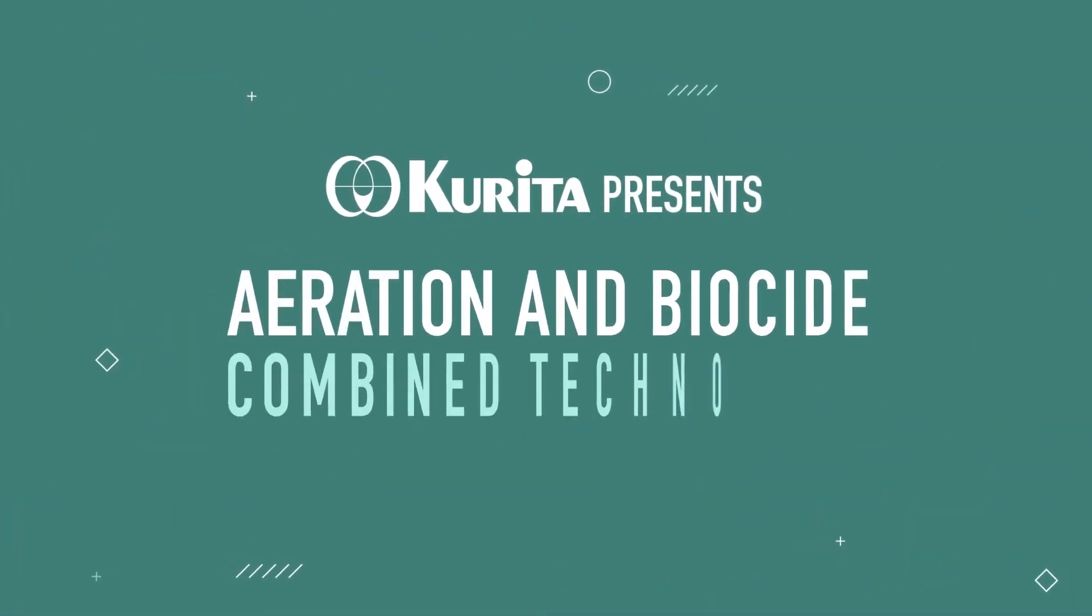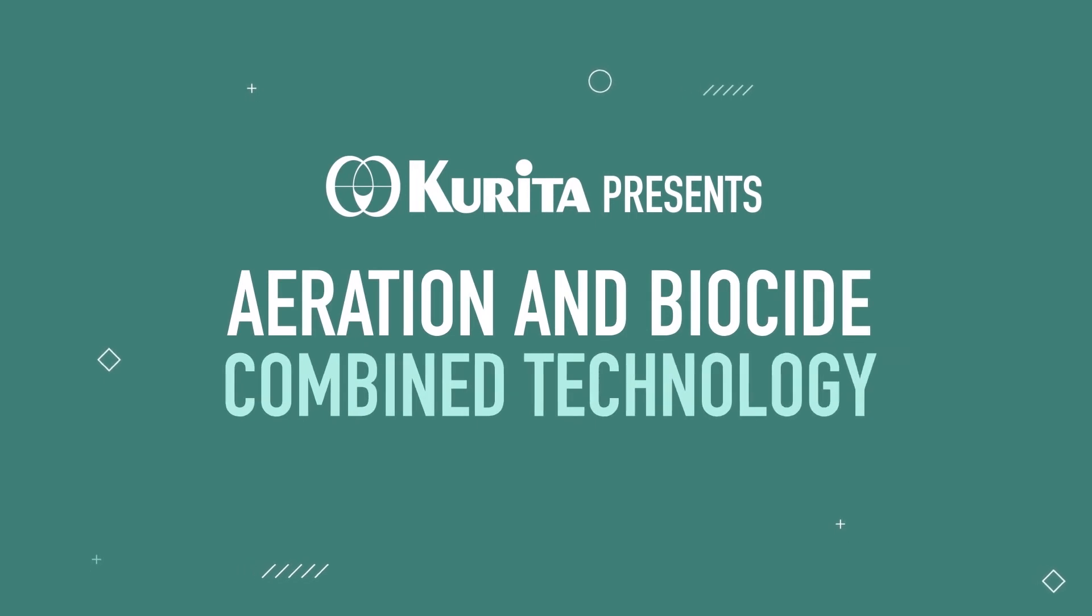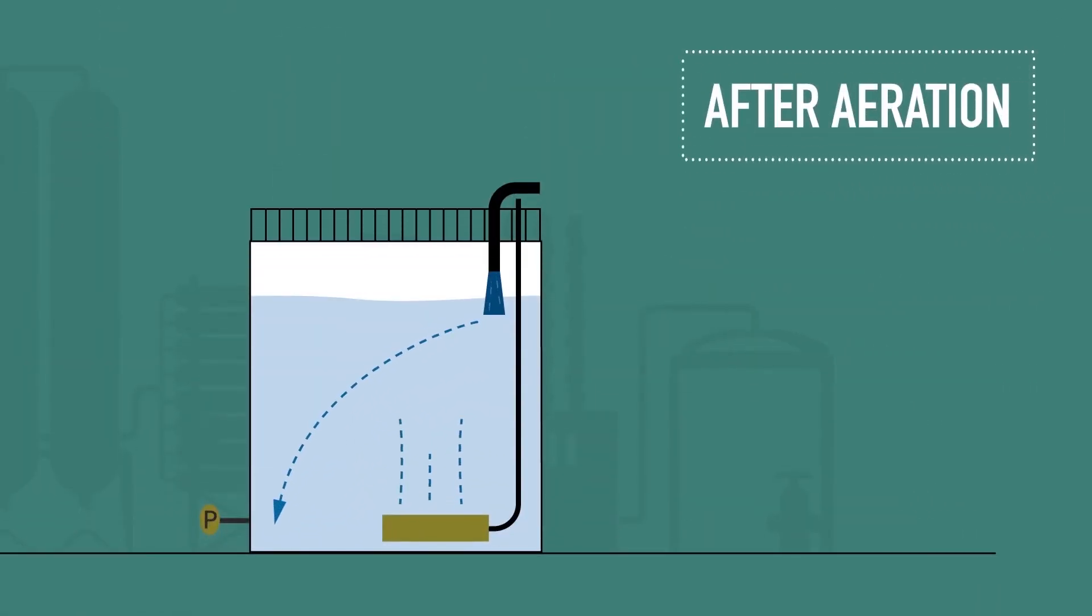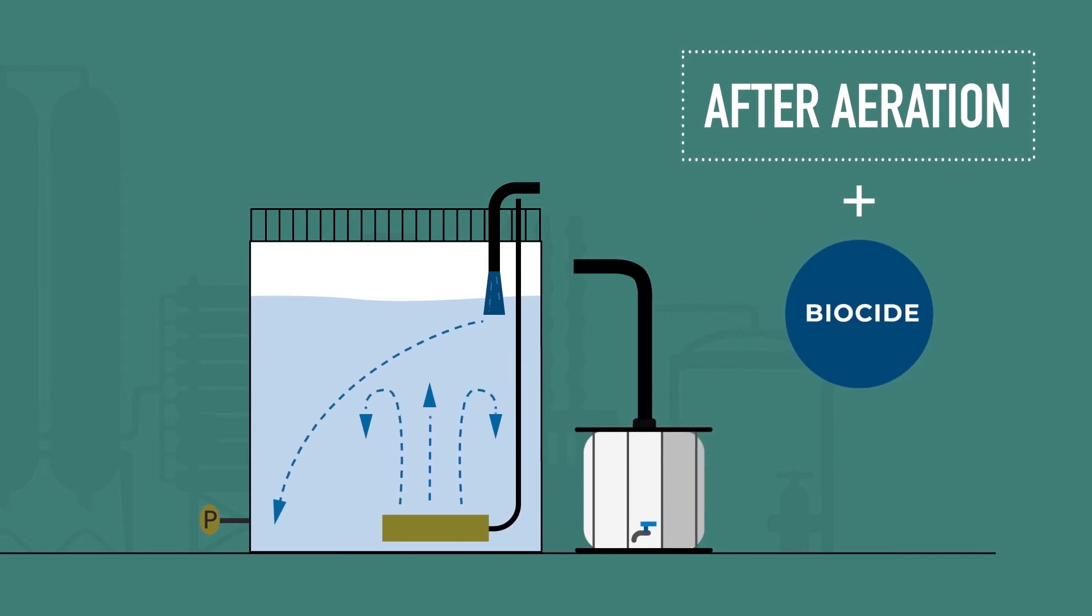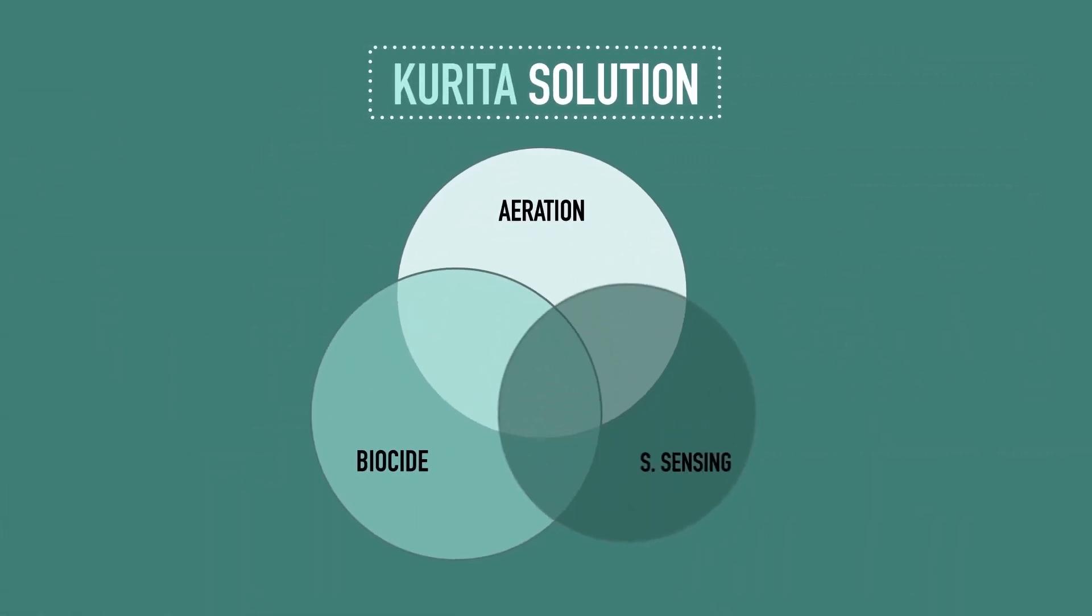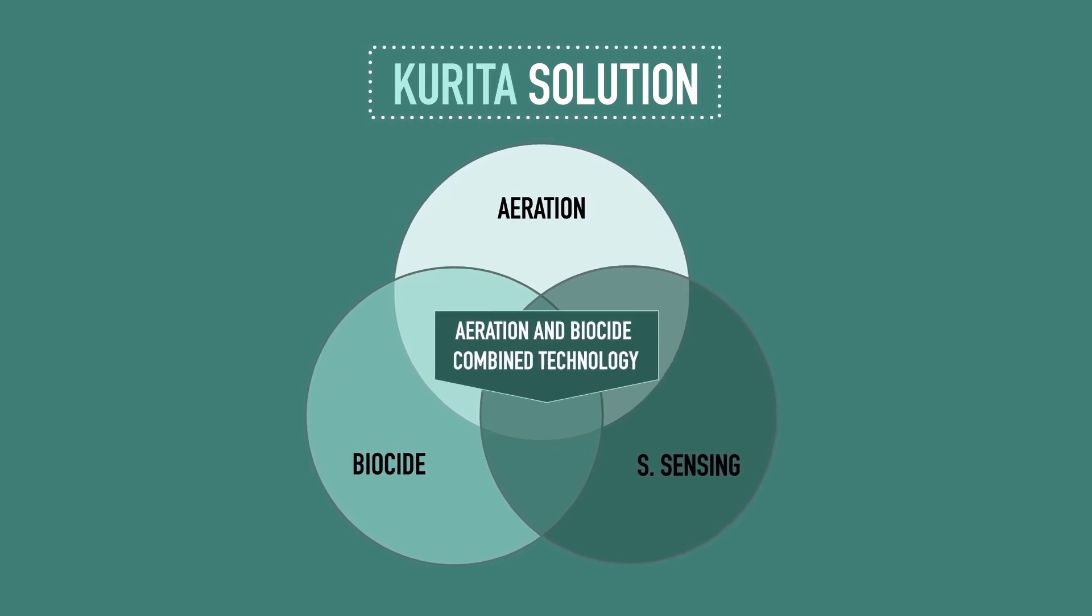Kurita presents aeration and biocide combined technology. With our technology, the stagnation part disappears. The combination of Kurita's patented biocontrol treatment, our aeration technology and S-sensing as monitoring system leads to a lack of slime layer which increases the efficiency of the whole system.